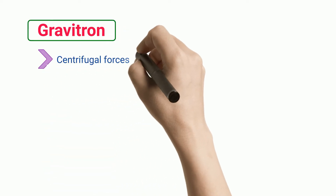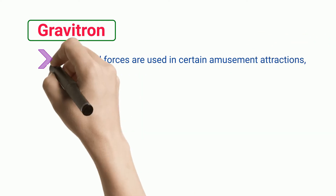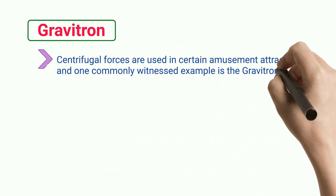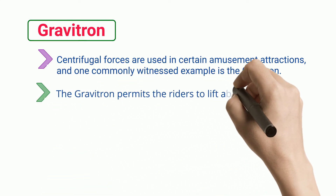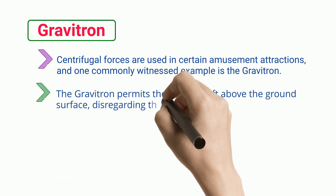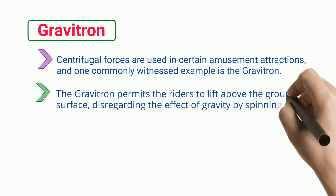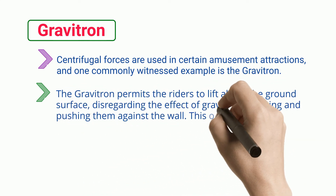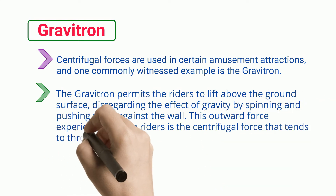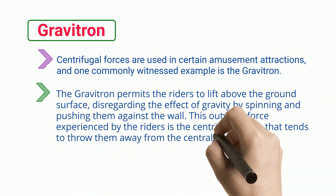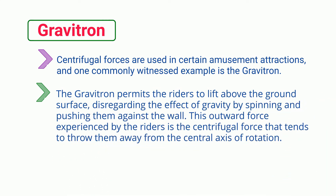Centrifugal forces are used in certain amusement attractions, and one commonly witnessed example is the Gravitron. The Gravitron permits riders to lift above the ground surface, disregarding the effect of gravity, by spinning and pushing them against the wall. This outward force experienced by the riders is the centrifugal force that tends to throw them away from the central axis of rotation.